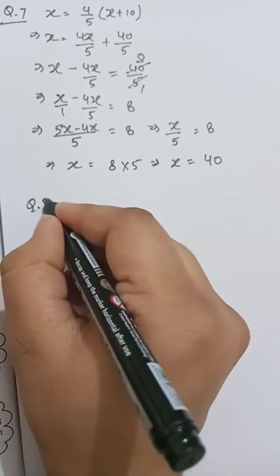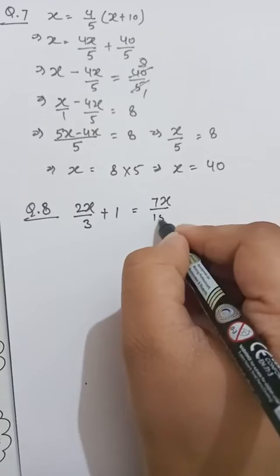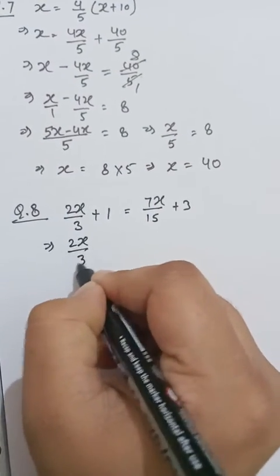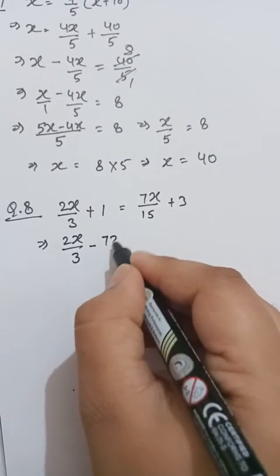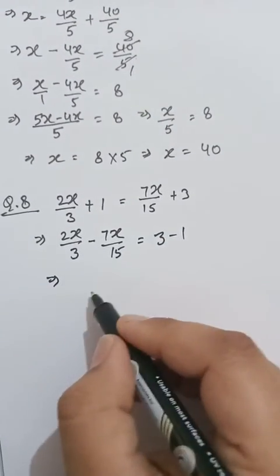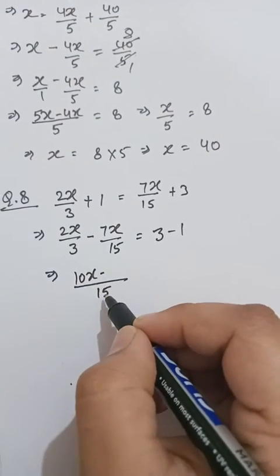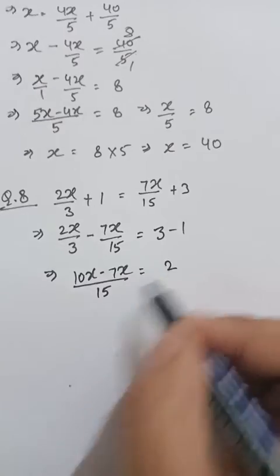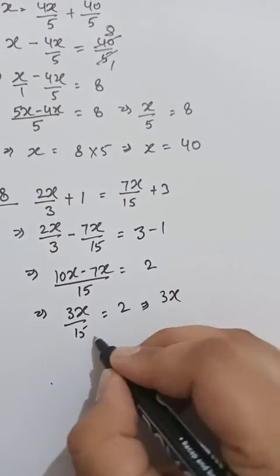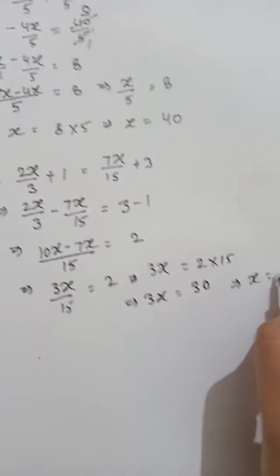Question number 8: 2x upon 3 plus 1 equals 7x upon 15 plus 3. Taking variable terms to one side: 2x/3 minus 7x/15 equals 2. Taking LCM 15: (10x minus 7x)/15 = 2, so 3x/15 = 2, giving 3x = 30, therefore x = 10.